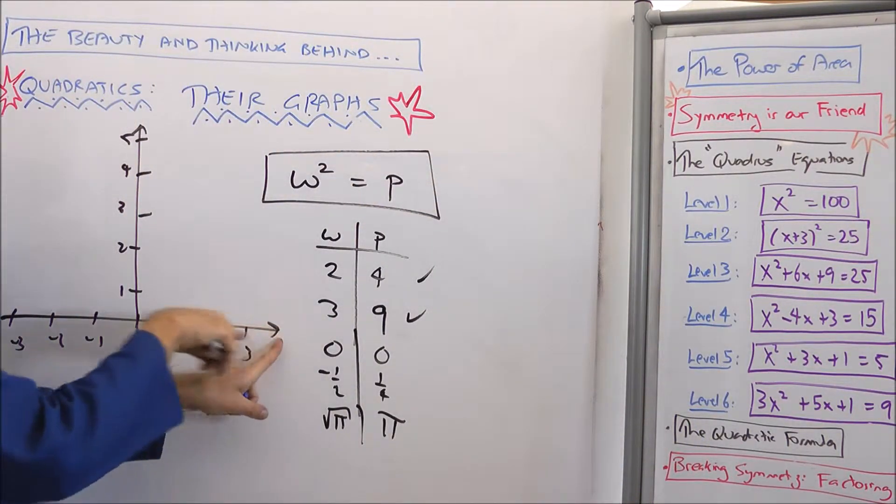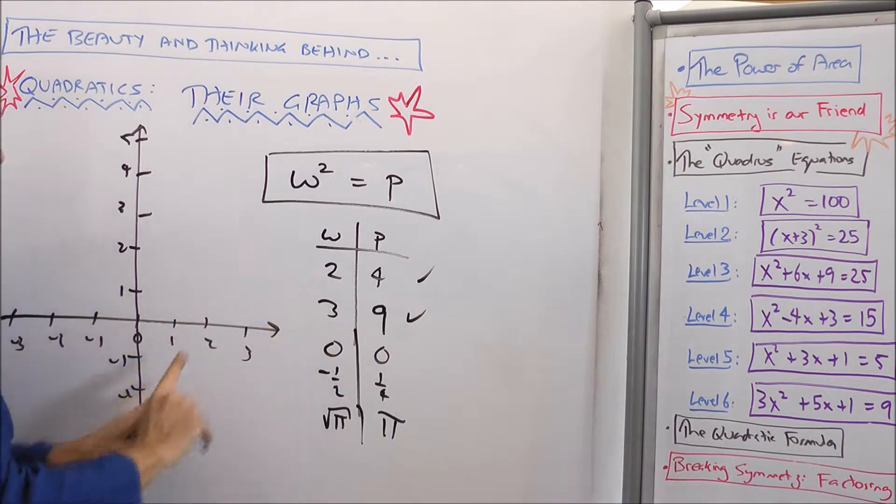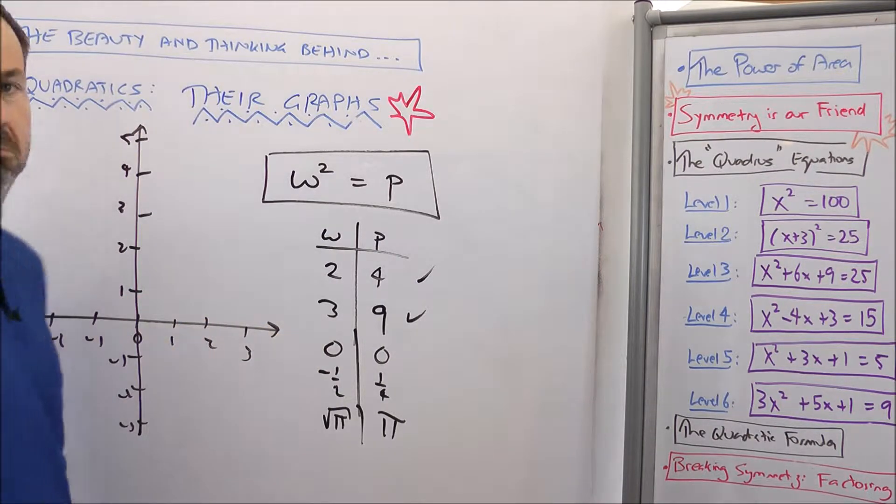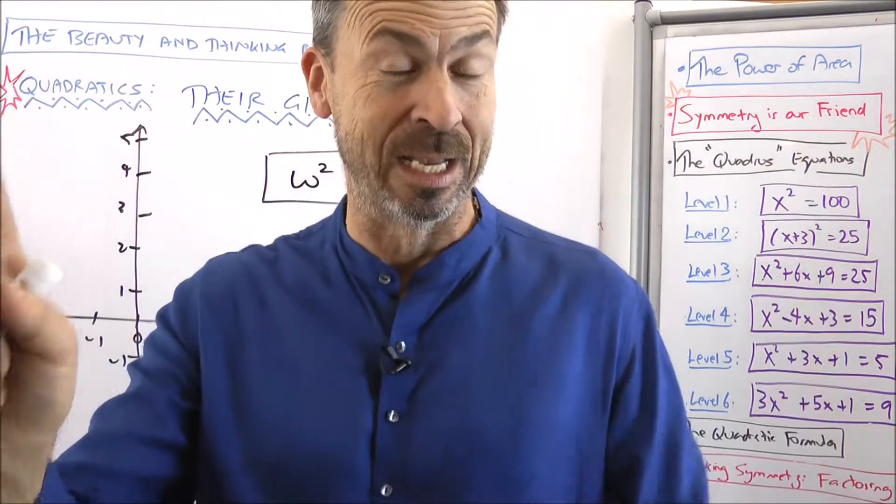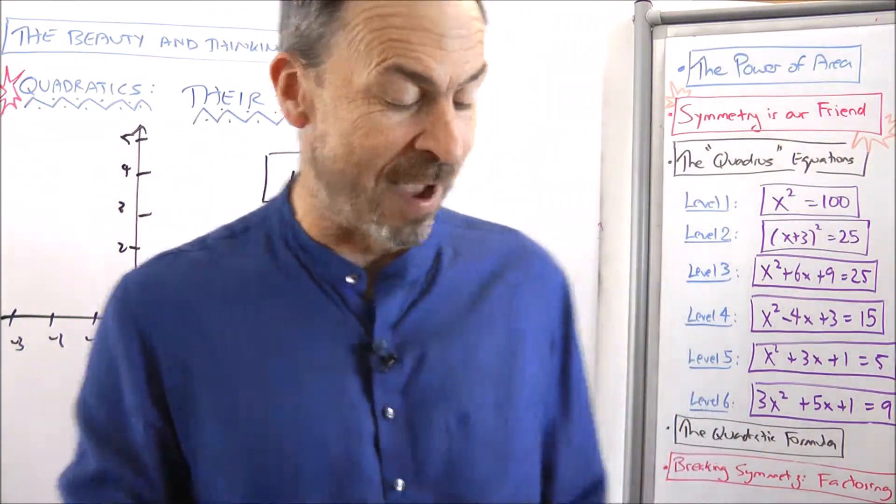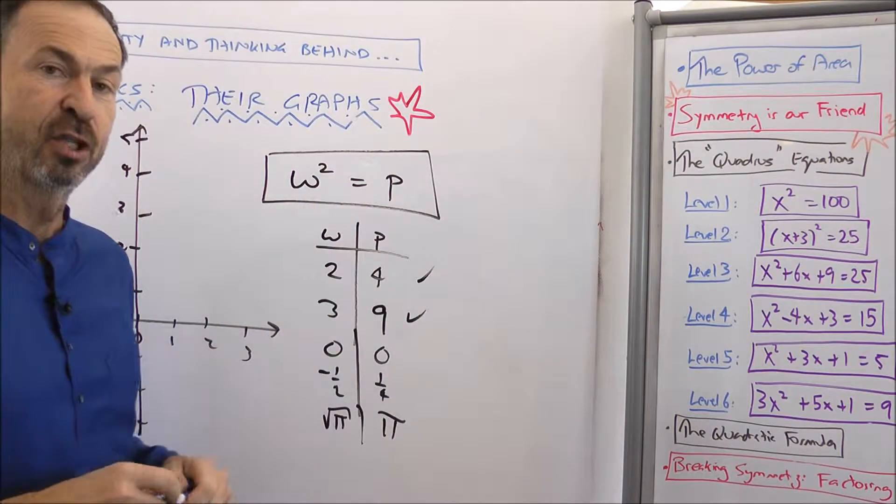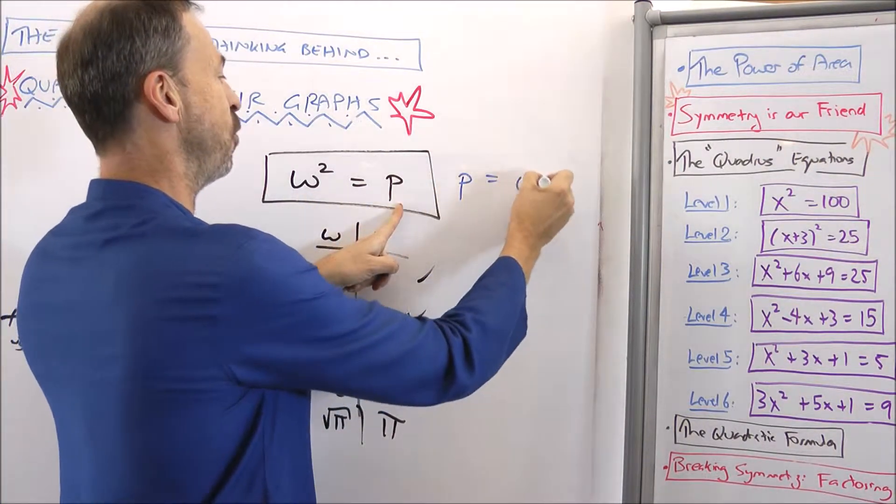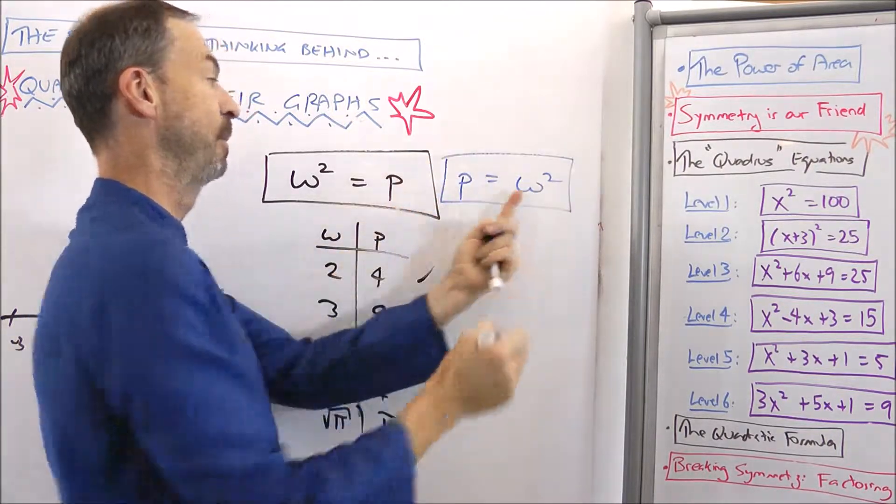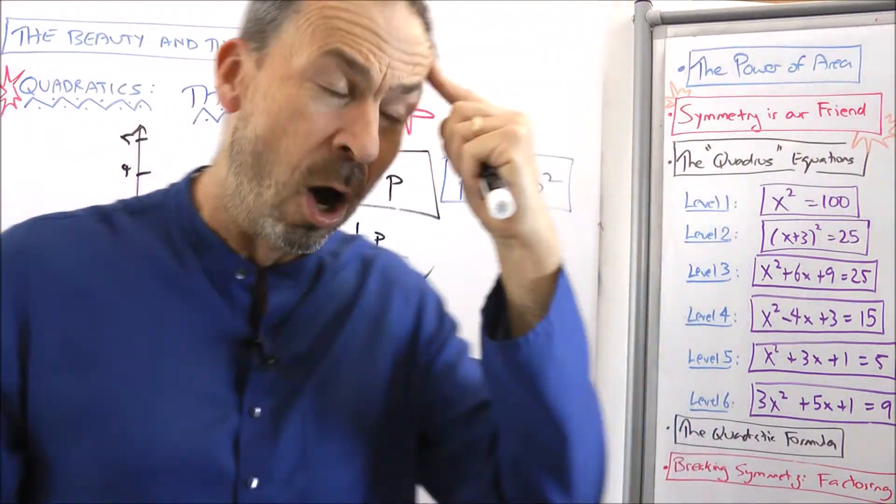Next thing is, is this the number line for W or for P? Is this the number line for W or for P? Don't know. Again, the mathematics doesn't care which one you choose, but society tends to have an opinion. People might think what I wrote here is a little strange. They might prefer me to write P is some formula in terms of W, namely it's W squared.